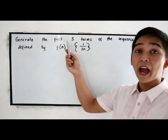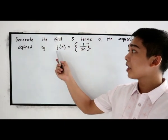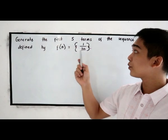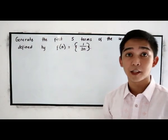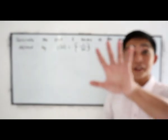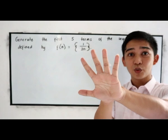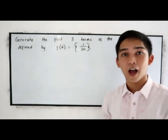Let's have another example for our sequence. Generate the first five terms of the sequence defined by f(n) = 1/(2n). So we need to get the first five terms, the A sub 1, A sub 2, A sub 3, A sub 4, and A sub 5.